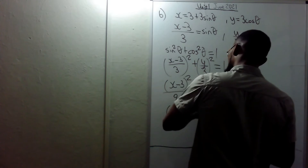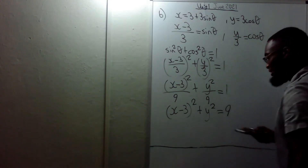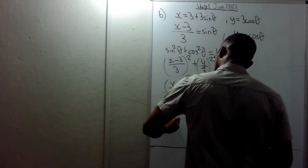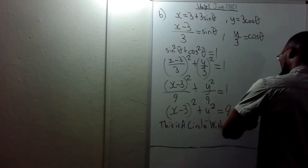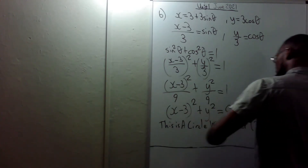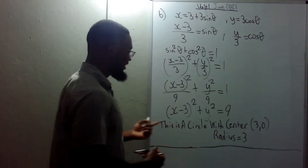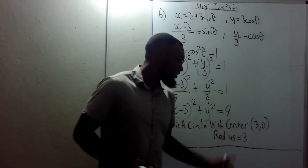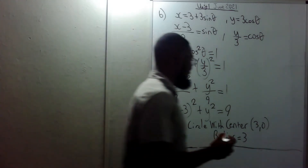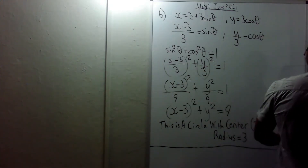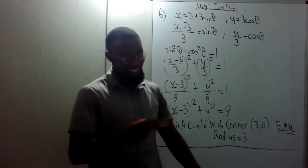(x minus 3) squared plus y squared equals 9. We can clearly see that this is a circle with center (3, 0) and a radius of 3. That proves that the parametric equations represent a circle with center (3, 0) and radius 3. This question was worth 5 marks.